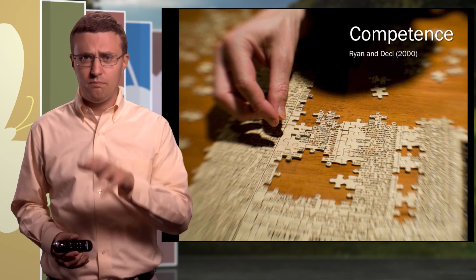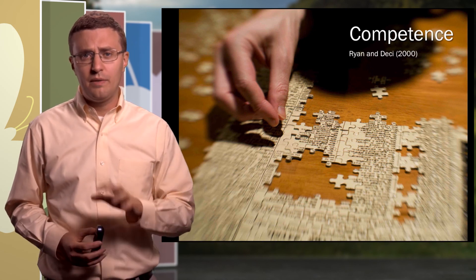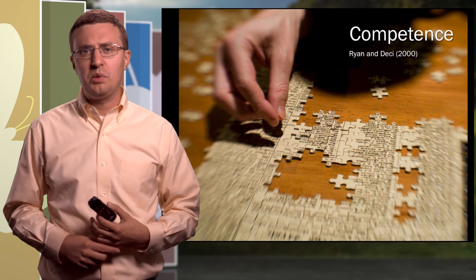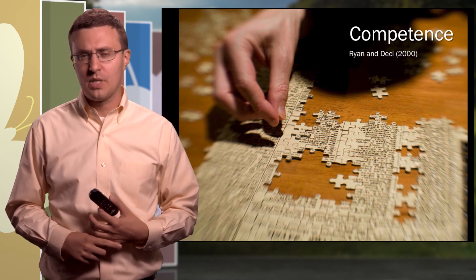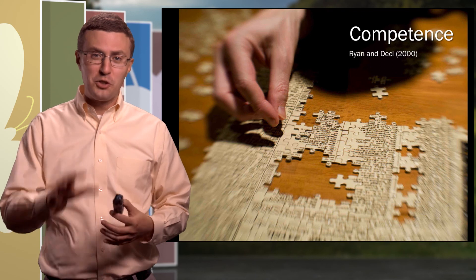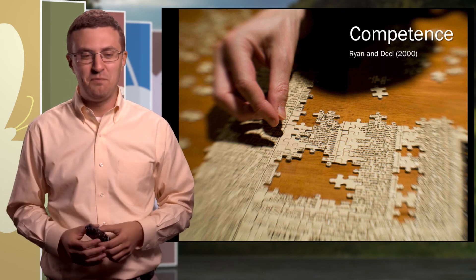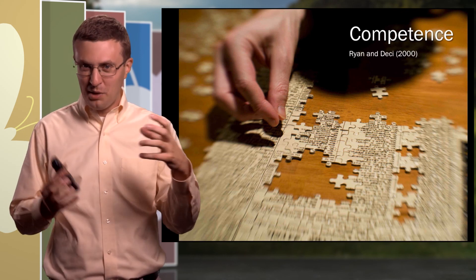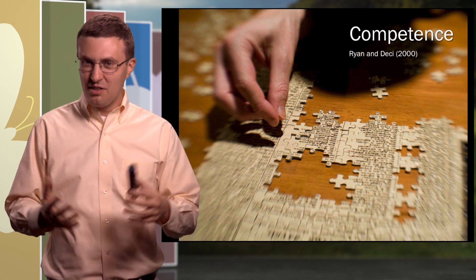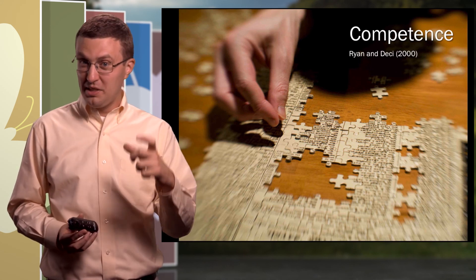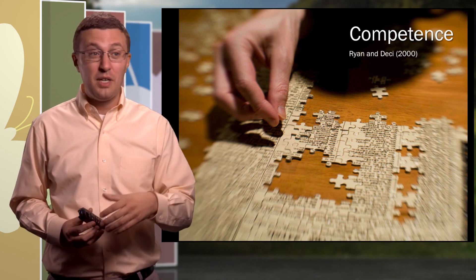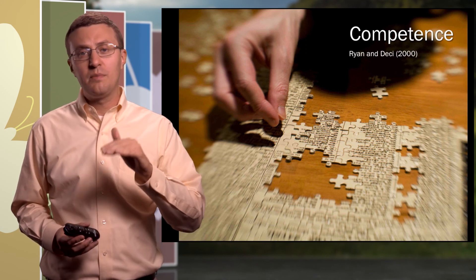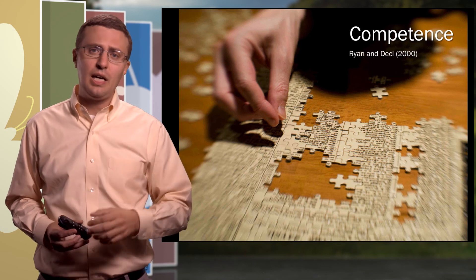Ryan and Deci have a really nice summary of some of the research on student motivation. They point to a few different factors that are at play with intrinsic motivations. One is this idea of competence. The visual here is of a puzzle — if there's too few pieces and the pieces are too big, it's not very interesting. But if there's too many pieces or the pieces are too small, it's too challenging. She's looking for something that's just right, and that's the idea behind competence.